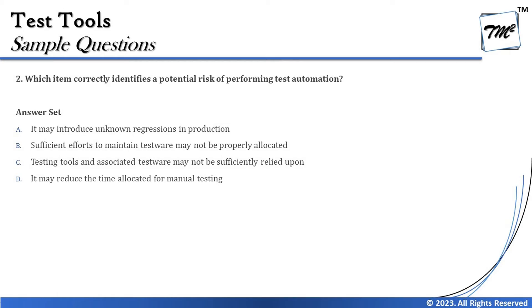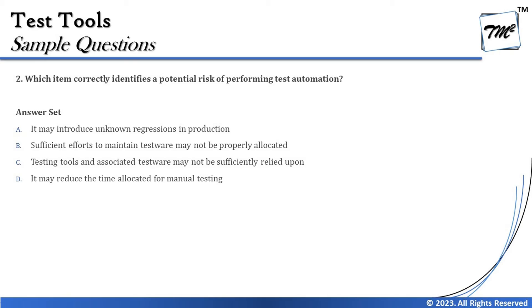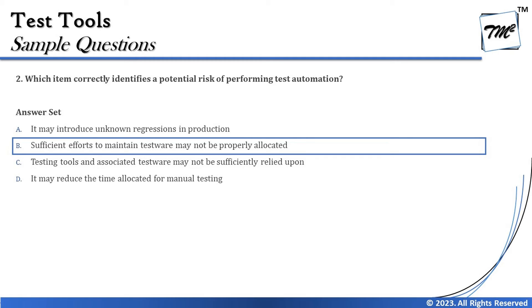Option D says it may reduce the time allocated for manual testing — that is obviously a benefit of having a tool, not a risk. So the right answer is B: sufficient efforts to maintain testware may not be properly allocated is a risk of using a test tool.